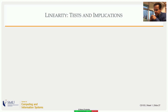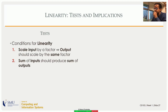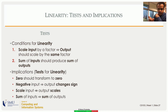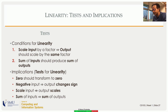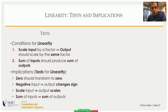To summarize the test: scale the input by a factor — the output should scale by the same factor. Sum two inputs — the output for the sum should equal the sum of the individual outputs. Key implications: zero should always transform to zero; this applies even for vectors — the zero vector must map to the zero vector. Also, a negative input should give a negative output: f(-x) should equal -f(x), since you're just multiplying by -1. A good testing order: first check if f(0) = 0; if not, stop. If yes, proceed to the other conditions.